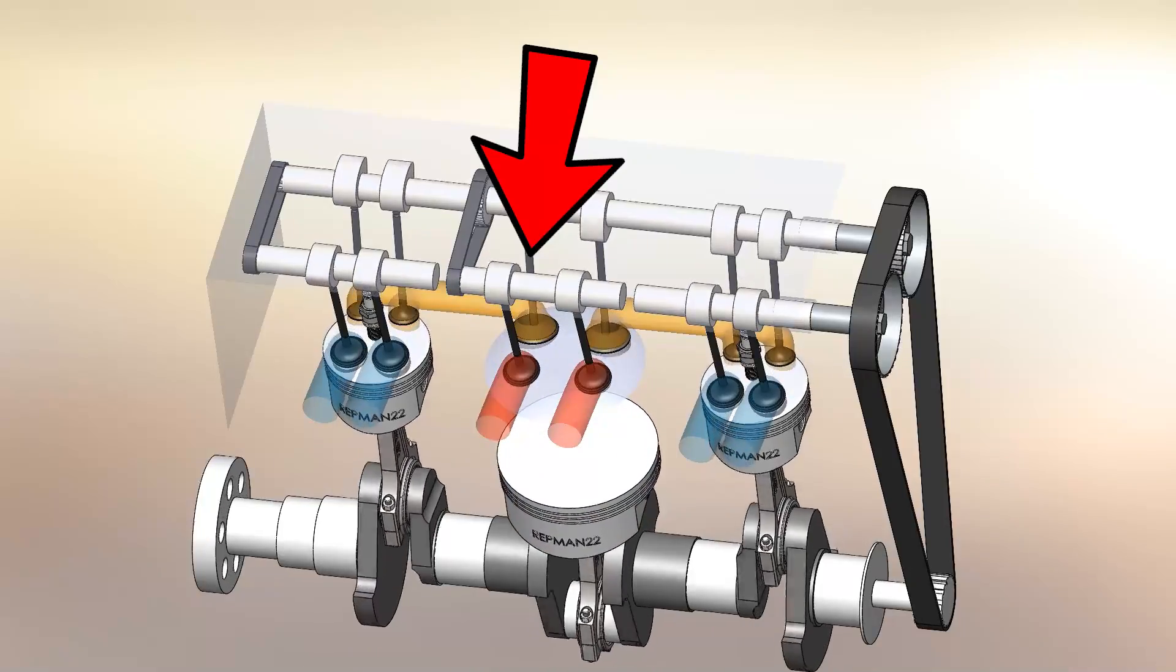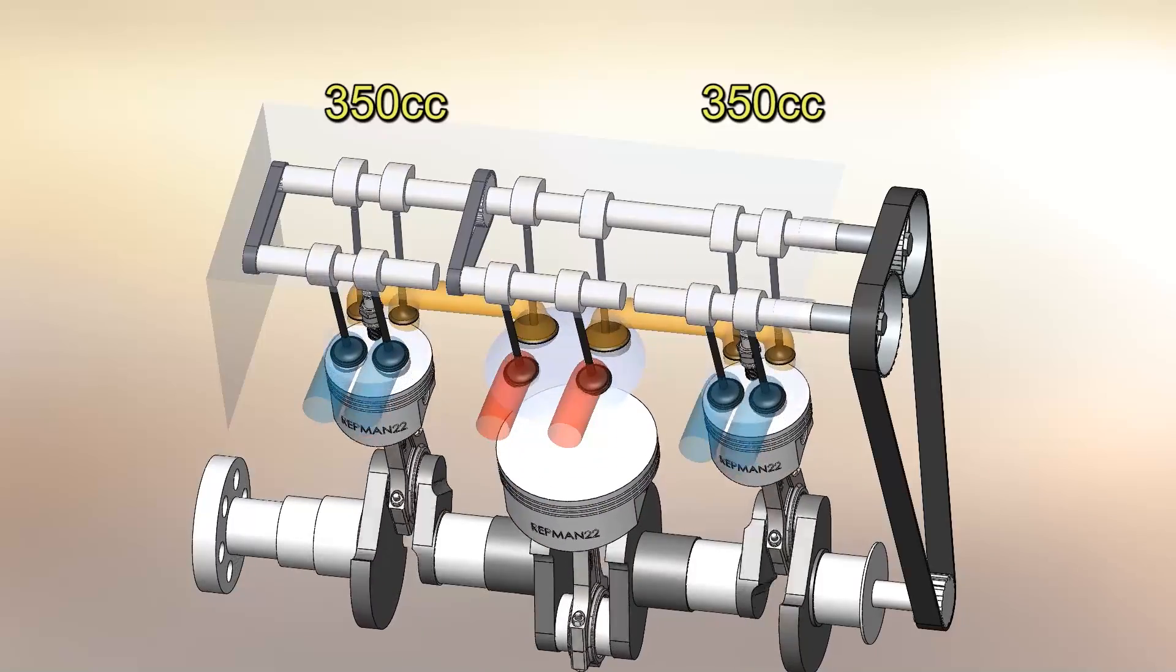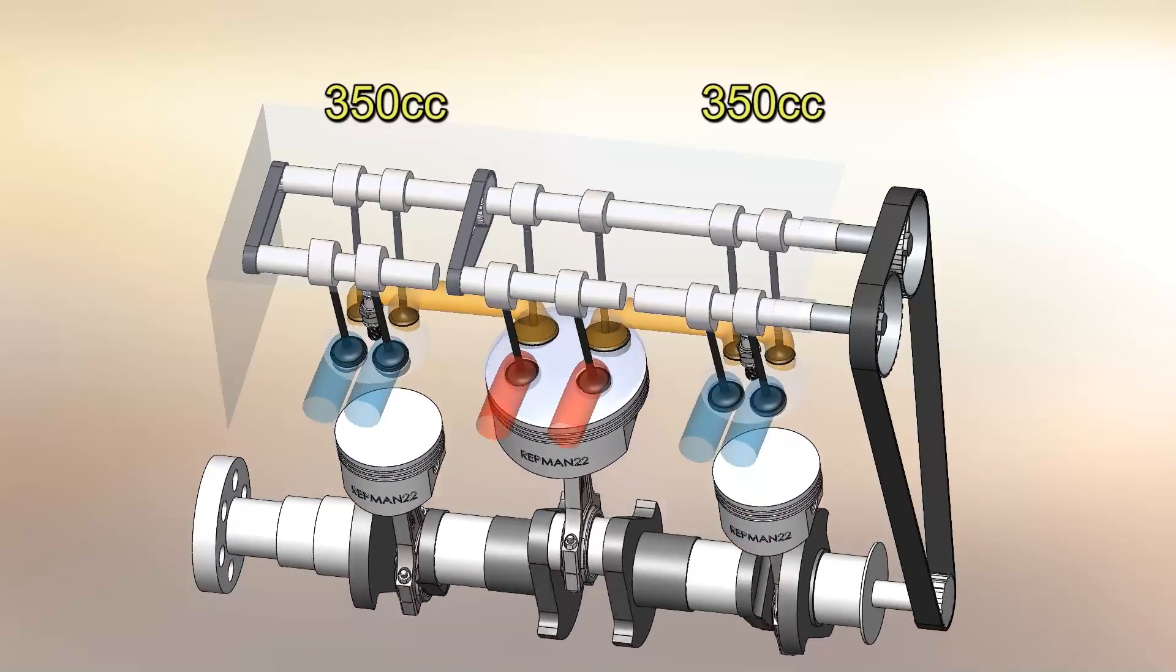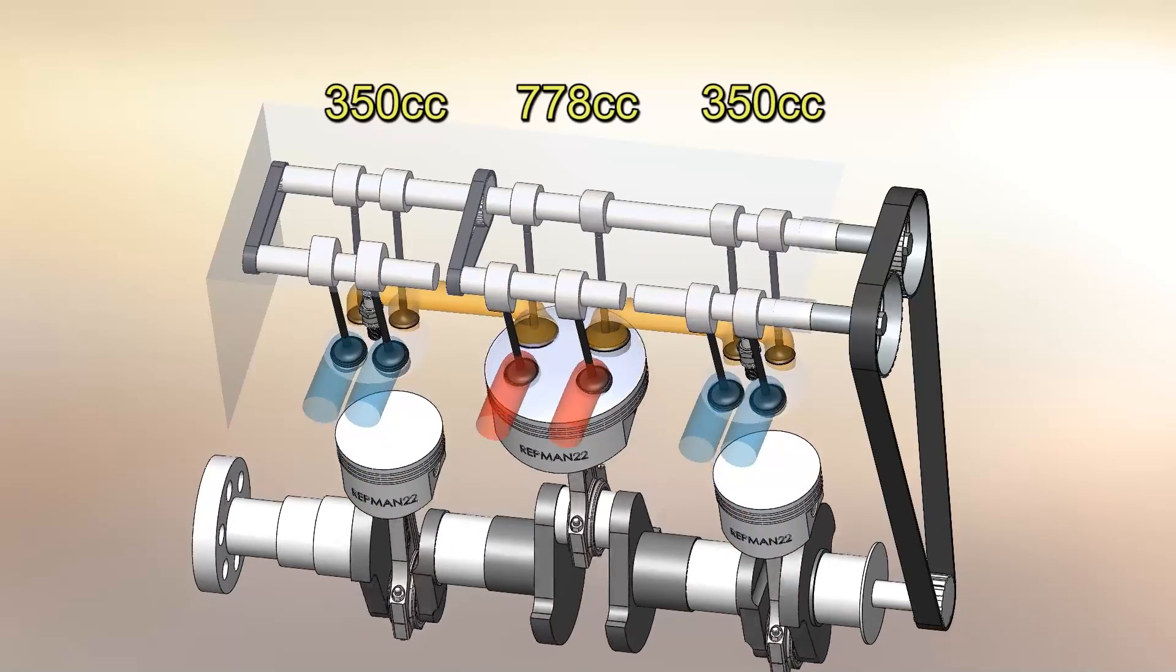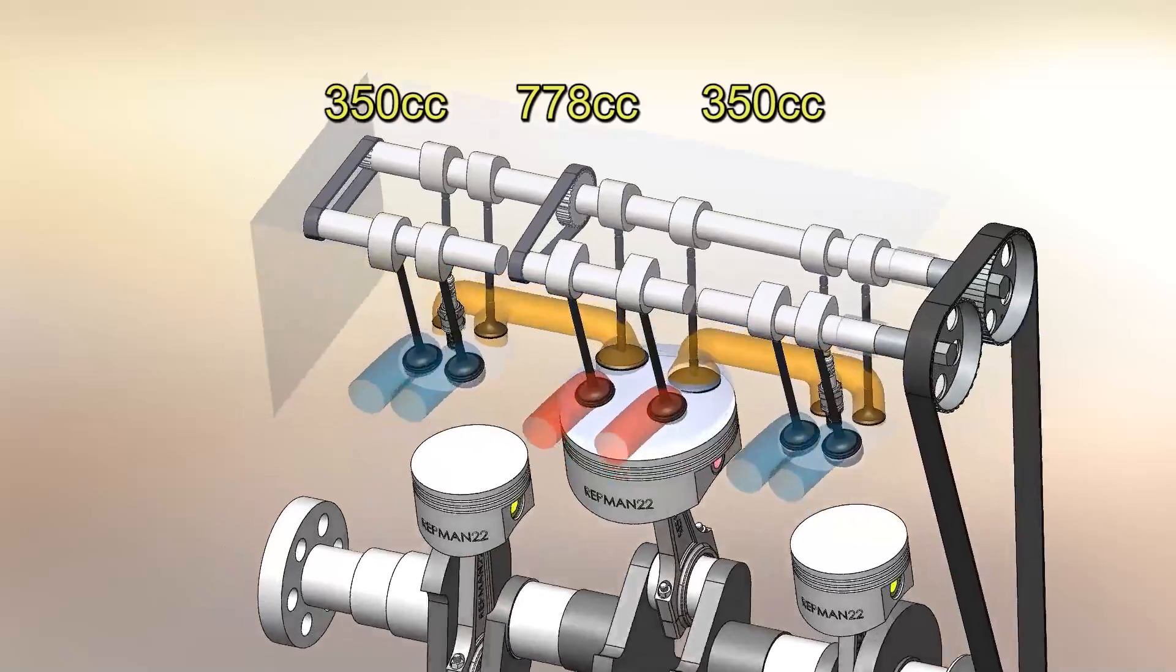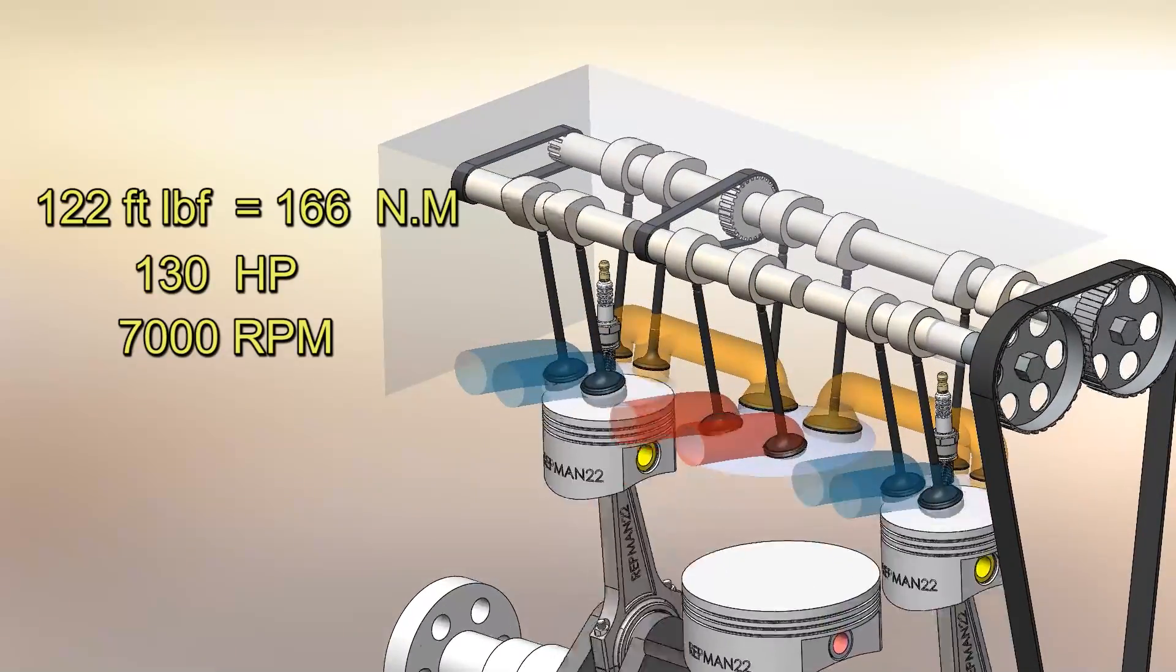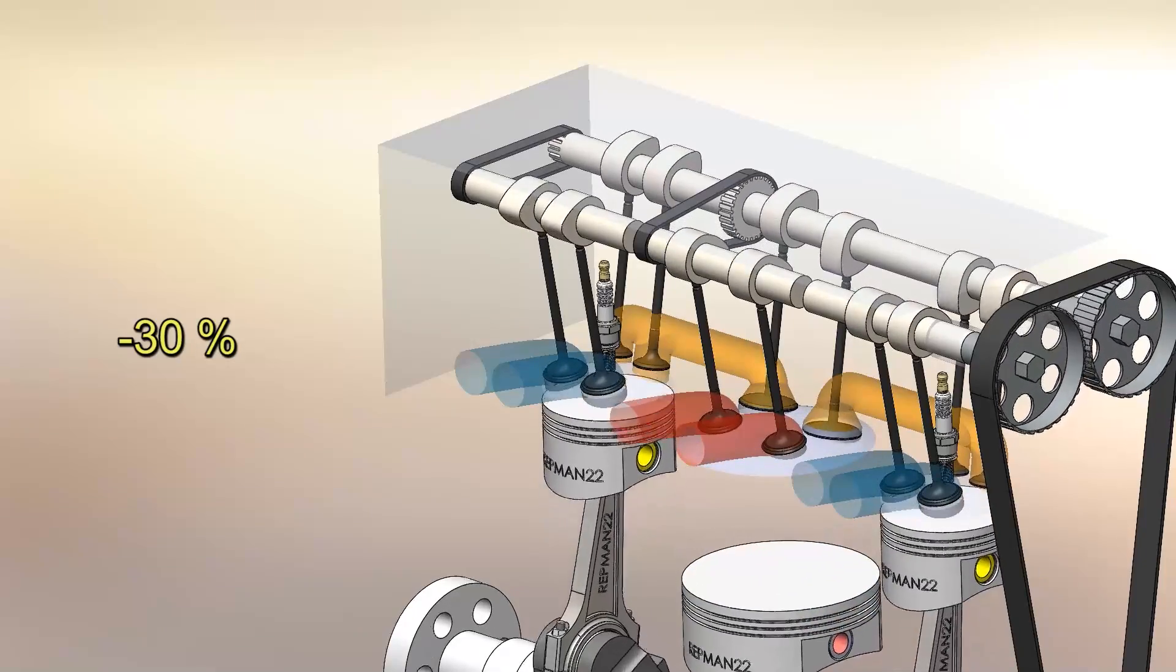There is a third camshaft that drives the valves of this center cylinder and rotates at twice the speed of the normal camshaft. In summary, all the system makes an engine of two cylinder and 700 cc of total displacement. With the help of the central expansion cylinder of 778 cc, it can deliver 122 pound-feet of torque and 130 horsepower at 7000 rpm. All this with 30% less fuel consumption than an engine of the same power.